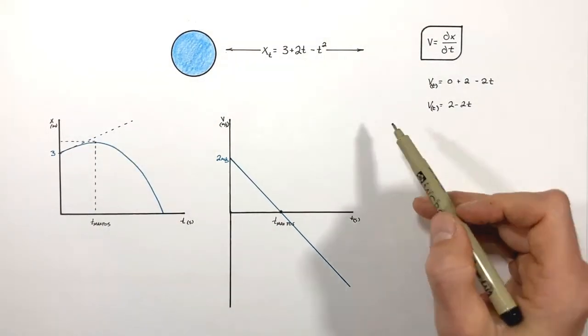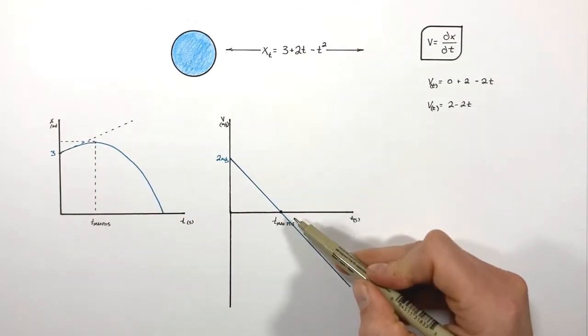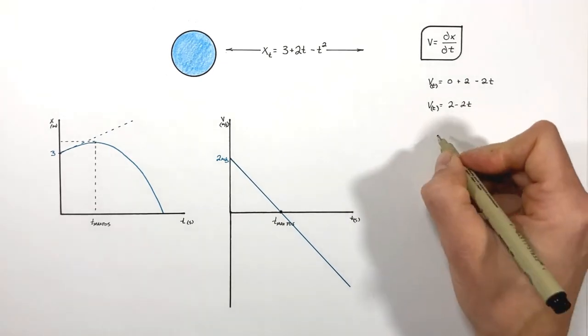So really all we're going to do on this problem to solve for the maximum position is we're going to figure out when the particle has a velocity of 0. So to do that, all we need to do is evaluate this equation to see when the velocity is 0.